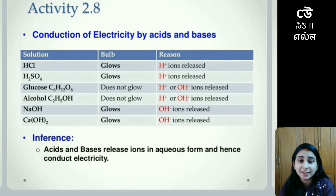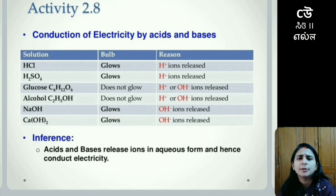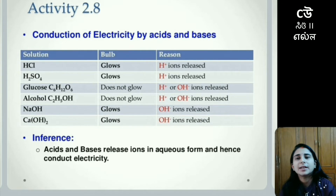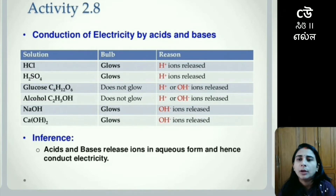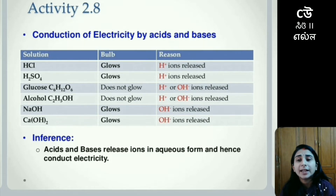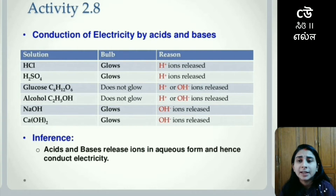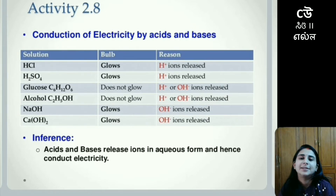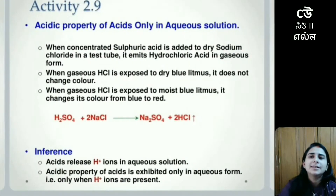We use a bulb to check if electricity is being conducted. HCl, which is an acid, will release H⁺ ions and the bulb will glow. H₂SO₄, sulfuric acid, will also release ions and the bulb will again glow. However, glucose and alcohol are compounds that do not release hydrogen or hydroxide ions effectively, so they cannot be used to conduct electricity. Bases such as sodium hydroxide and calcium hydroxide will release hydroxide ions when dissolved in water and the bulb will also glow, indicating electricity conduction.